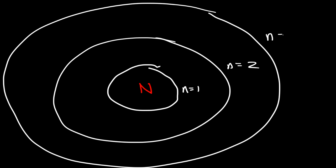An electron that occupies the third energy level has more energy than one that occupies the second energy level. n represents the principal quantum number — it describes the size and the energy of that orbital. As n increases, the distance from the nucleus increases as well. Electrons closer to the nucleus exist at lower energy levels; electrons further away exist at higher energy levels. So n is the principal quantum number, associated with the energy level.